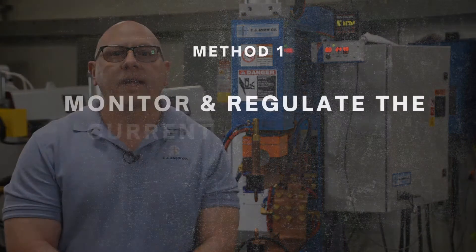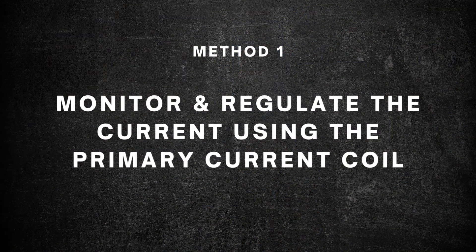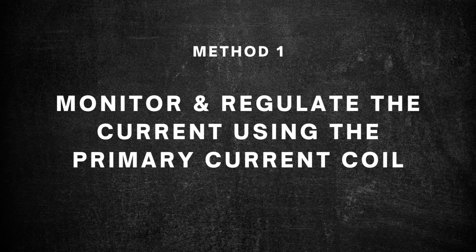The first method is to monitor and regulate the current using the primary current coil, which comes standard in the weld control, while monitoring the welding transformer turns ratio. To perform this procedure, the steps are as follows.